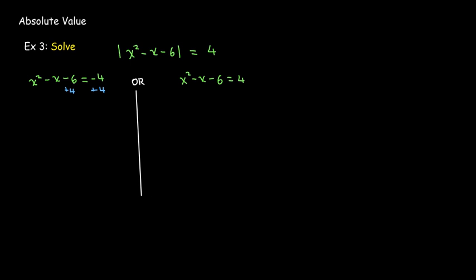And then it turns out that I can factor this. x squared minus x minus 2 is the product of x minus 2 and x plus 1, which gives me two solutions, x equals negative 2 or x equals negative 1.